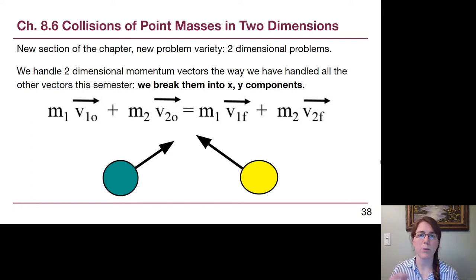So the new section of the chapter has to do with the fact that momentum is a vector because these velocities we've been dealing with are vectors. And so when we look at the equation we notice those little arrows over the velocities because these are vectors.